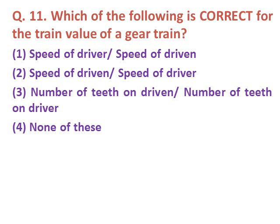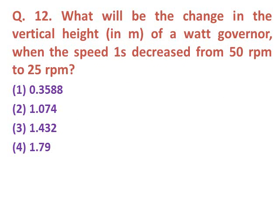Question eleven: Which of the following is correct for the train value of a gear train? Option one: speed of driver upon speed of driven. Option two: speed of driven upon speed of driver. Option three: number of teeth on driven upon number of teeth on driver. Option four: none of these. The correct answer is option two — speed of driven upon speed of driver.